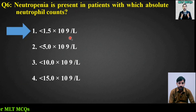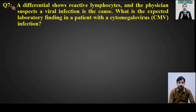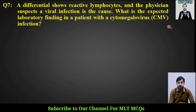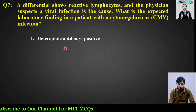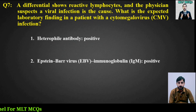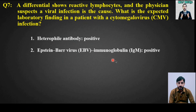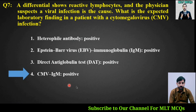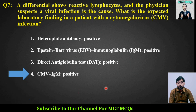MCQ number 7: A differential shows reactive lymphocytes and the physician suspects a viral infection is the cause. What is the expected laboratory finding in a patient with cytomegalovirus (CMV) infection? Options are: heterophile antibody will be positive, Epstein-Barr IgM will be positive, direct anti-globulin test will be positive, or CMV IgM will be positive. The right answer is option number 4, CMV IgM will be positive.